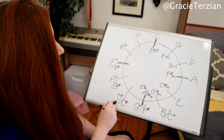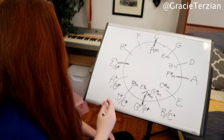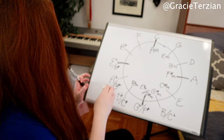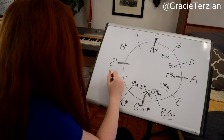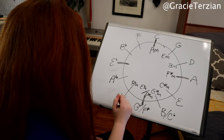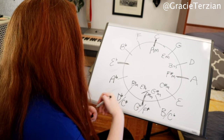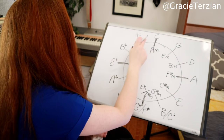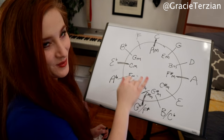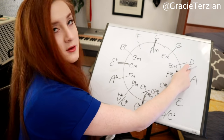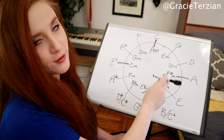Now let's find the relative minor of D flat: move over three spaces — one, two, three — D flat. The relative minor of A flat: move one, two, three — F minor. For E flat: one, two, three — C minor. For B flat: one, two, three — G minor. For F: one, two, three — D minor. That's how we can figure out relative minor keys using the circle of fifths, just moving over three spaces.